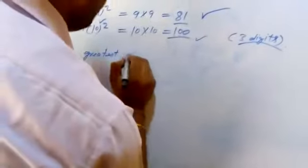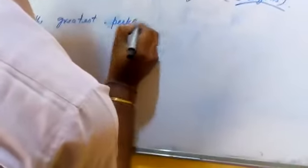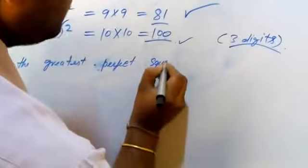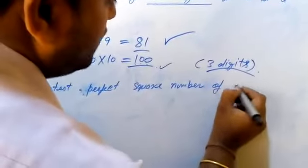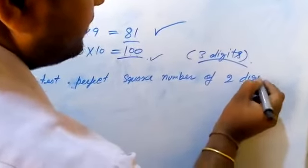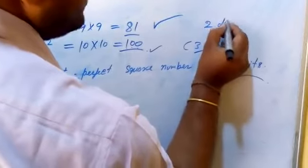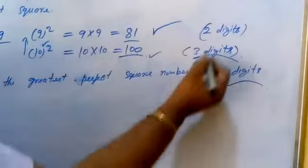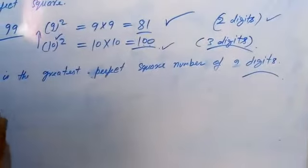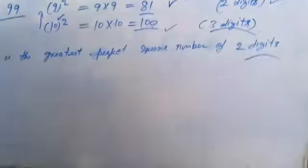81 is the greatest perfect square of two-digit numbers. So hume subscribe karna hai — sabse bada number find hua: 81 is the greatest perfect square of the two-digit number. Thank you.